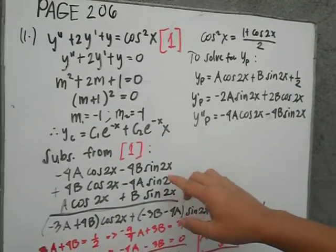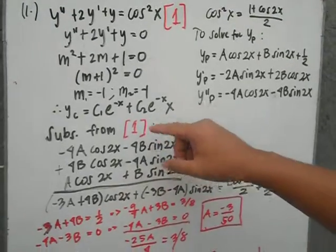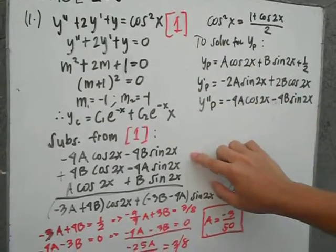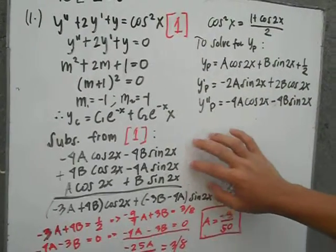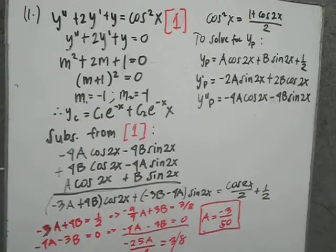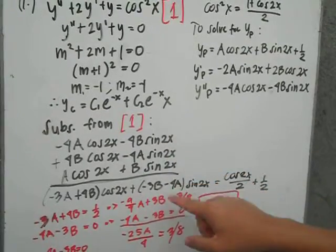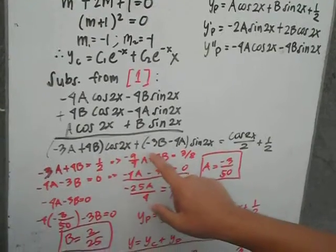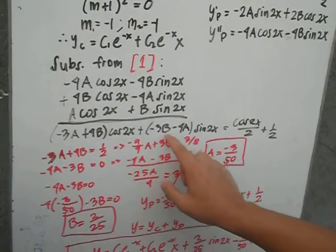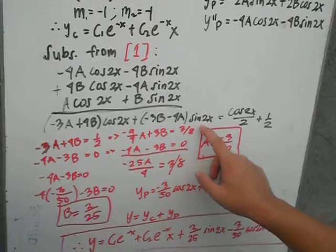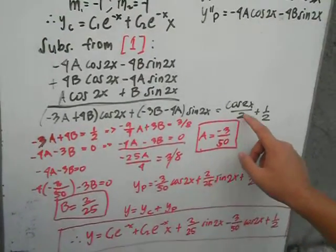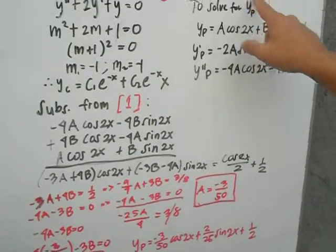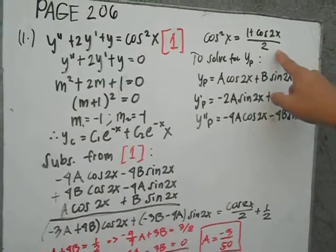Substituting into the given equation gives us three equations. Adding them up, we get negative 3a plus 4b times cosine 2x plus negative 3b minus 4a times sine 2x equals cosine 2x over 2 plus one half, since cosine squared x equals 1 plus cosine 2x over 2.